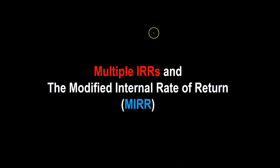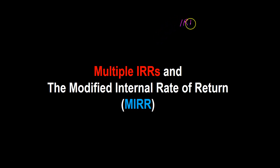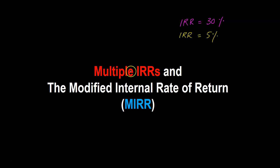One of the drawbacks of using IRR as a way to evaluate investments is that if your project has multiple IRRs, you don't know which IRR is the right one to use. So if your project has an IRR of say 30% but your calculations also show an IRR of 5%, it's not immediately clear which one is the right one to use. That's the problem of having multiple IRRs.